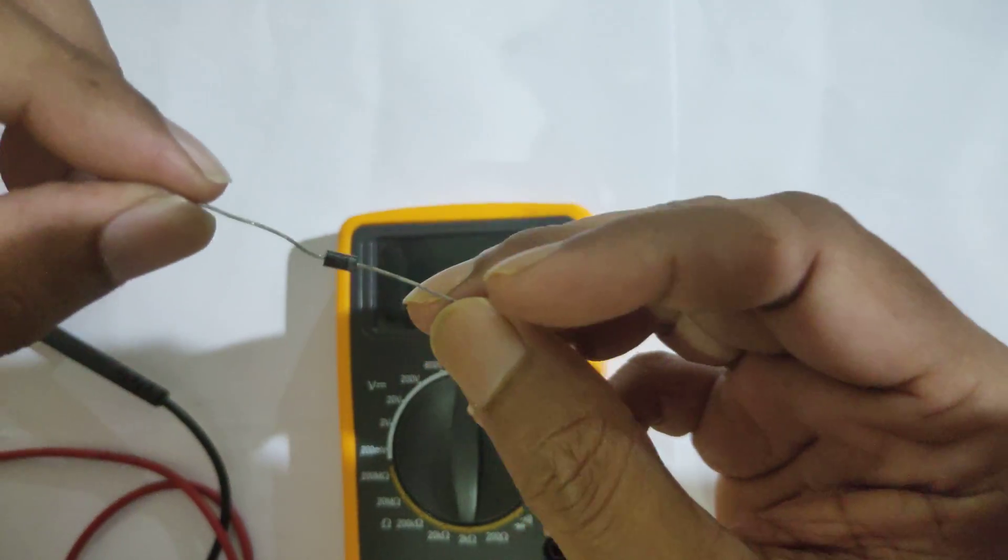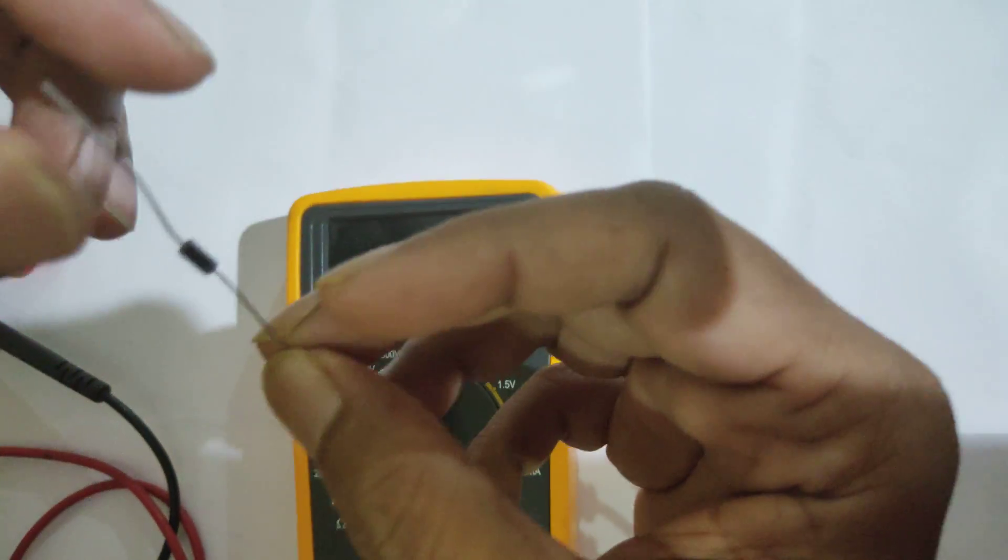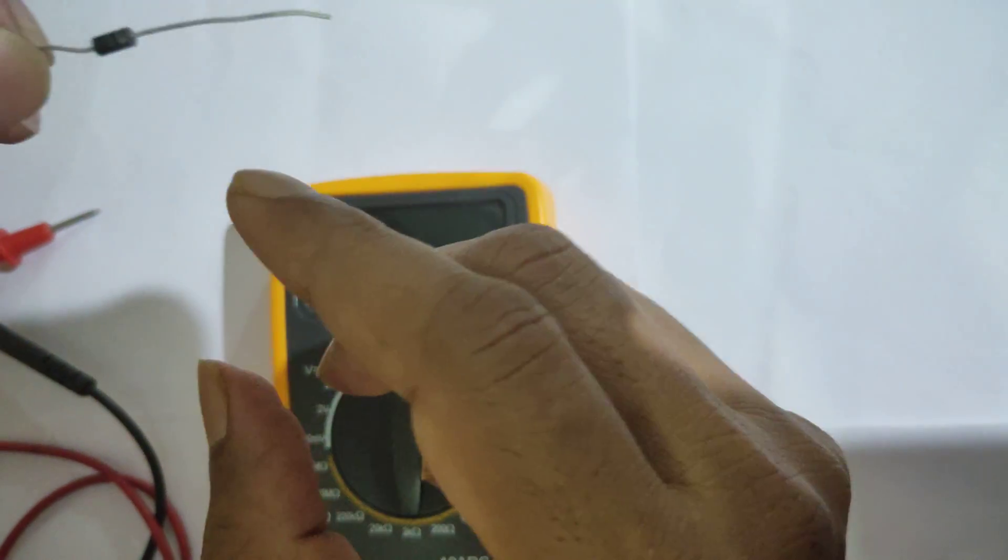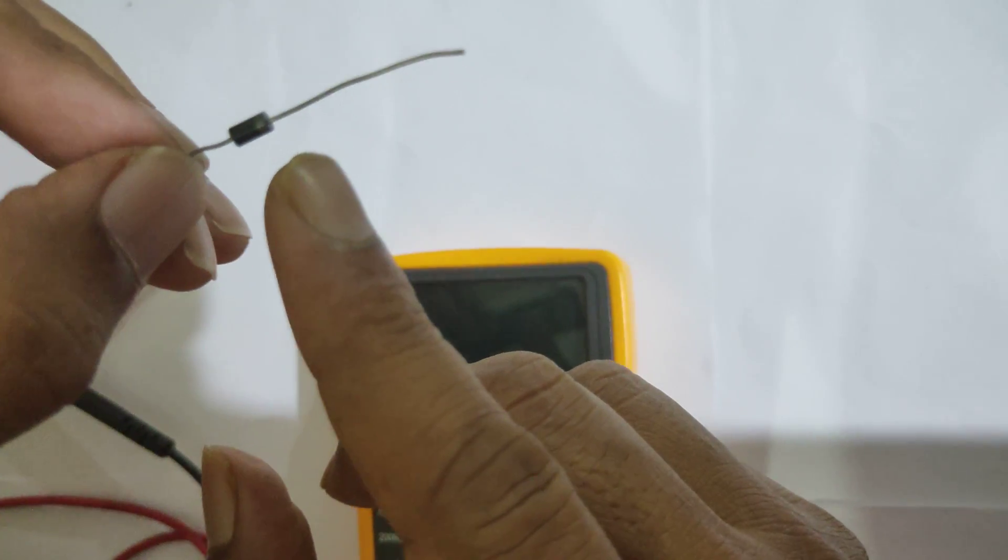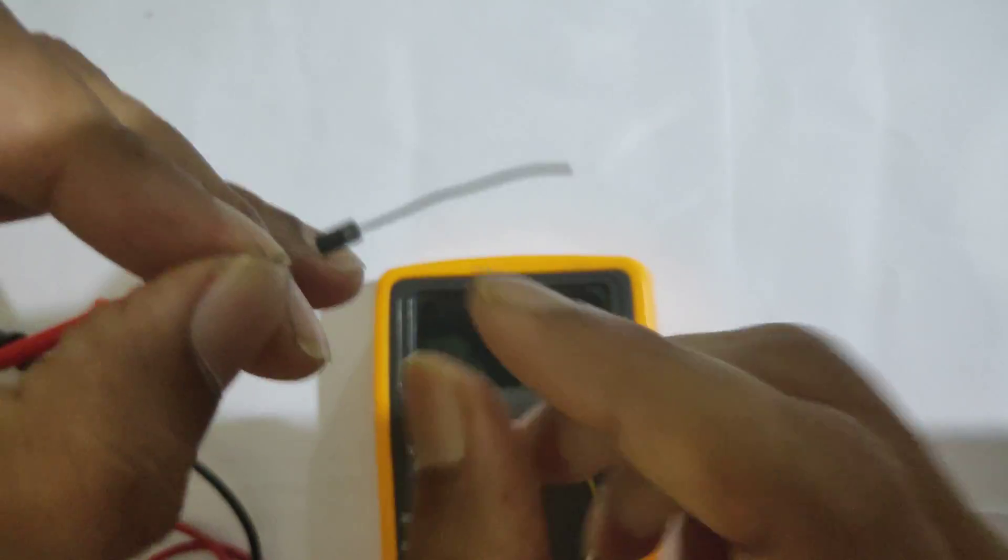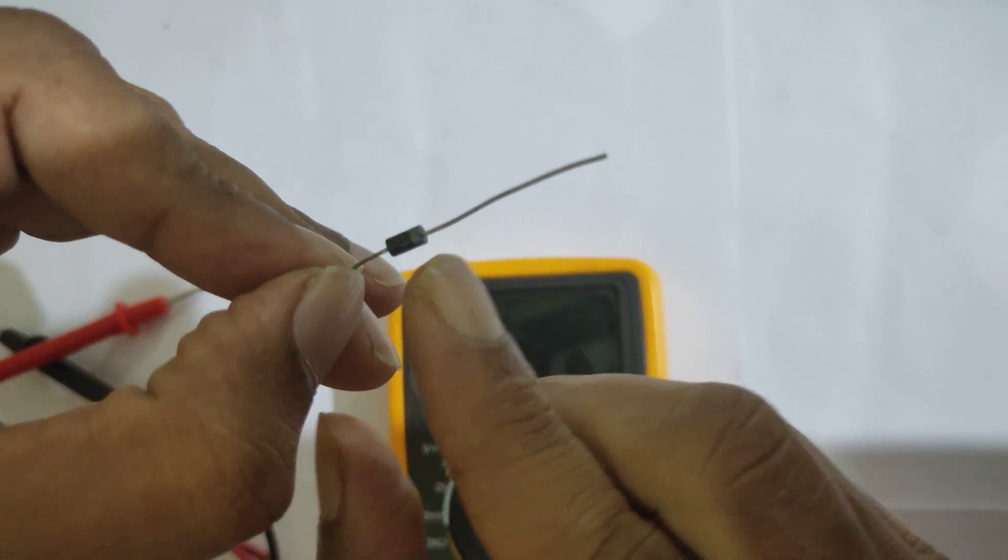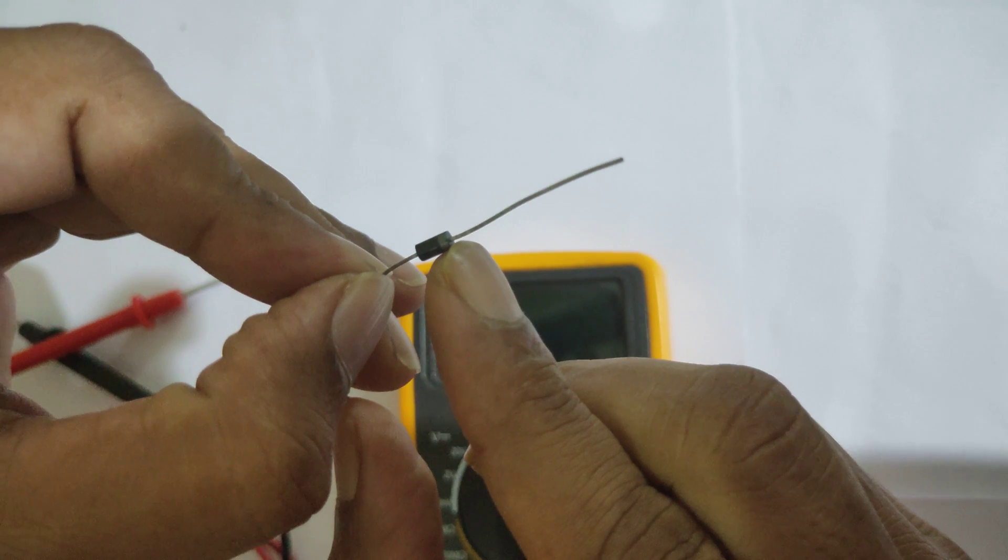This is a diode. Its configuration is 4007. In the diode symbol you have an arrow and a bar mark. Here there is no arrow and bar. You have a black and silver part. Black is bigger than the silver part.